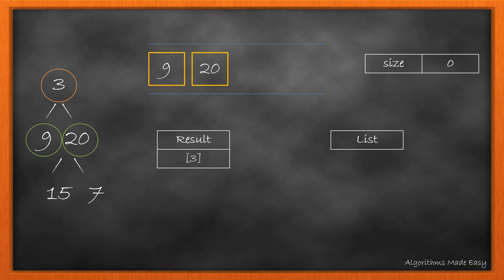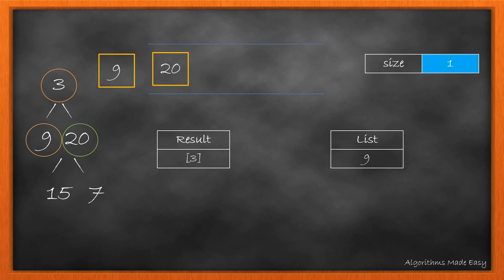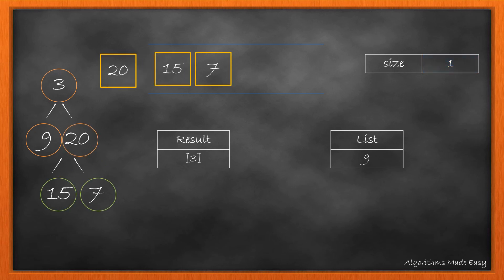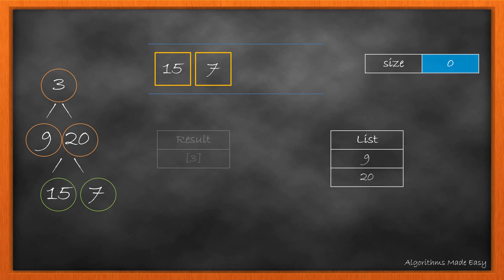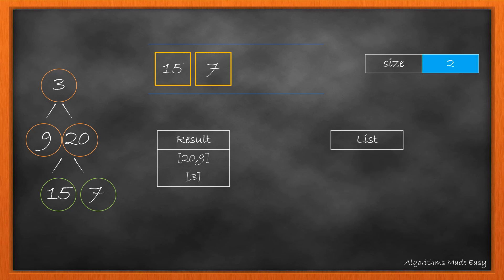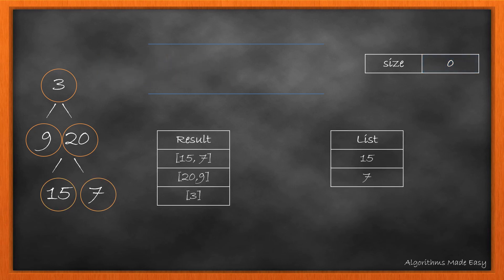As size becomes 0, we come out of the loop and add the list into result. Now as the queue is not empty, we again initialize our list and size. As size is 2 we start looping — we first remove 9. As it does not have children, nothing gets added, and we add 9 into our list. Size is still 1, so we remove 20, add both its children into the queue, and add 20 into the list. As size becomes 0, we add the list at index 0. Queue is still not empty so we follow the same procedure. As the queue is empty, we return result.